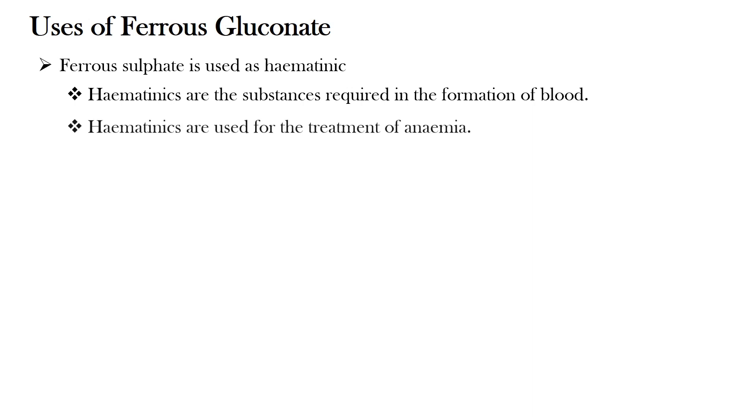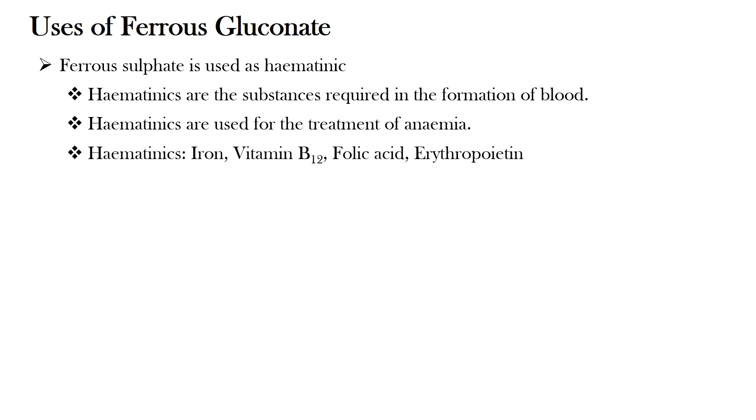Ferrous Gluconate is used as a hematenic. Hematenics are substances required in the formation of blood and are used for the treatment of anemia. Hematenics include iron, vitamin B12, folic acid, and erythropoietin.